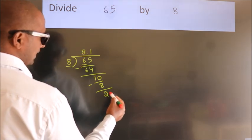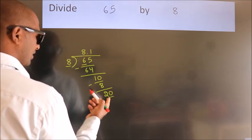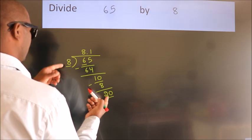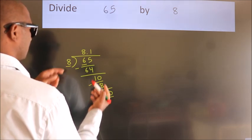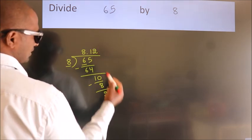So directly take 0. So, 20. A number close to 20 in 8 table is 8 times 2, 16.